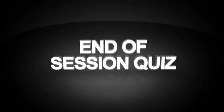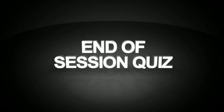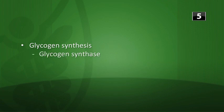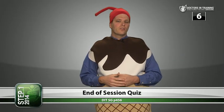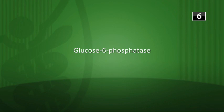That's it for glycogen. Work through the intersession quiz, then we'll go over the answers. The rate-limiting enzyme for glycogen synthesis is glycogen synthase; for glycogenolysis it's glycogen phosphorylase. The enzyme that converts glucose-6-phosphate to glucose is glucose-6-phosphatase — also the enzyme deficient in Von Gierke disease.